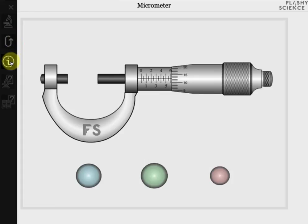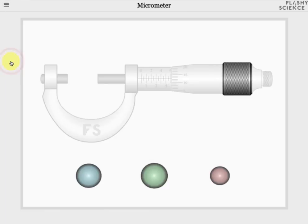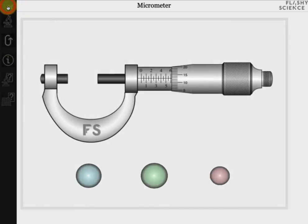The next icon is click information. If you click this, it shows you what can be clicked in the experiment to allow you to control it: the thumbscrew and the three samples.